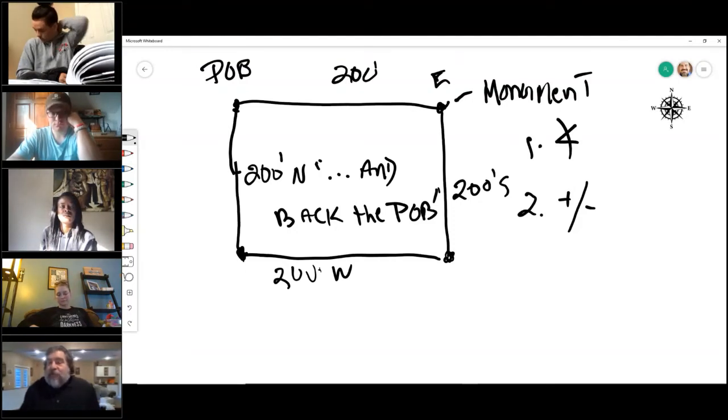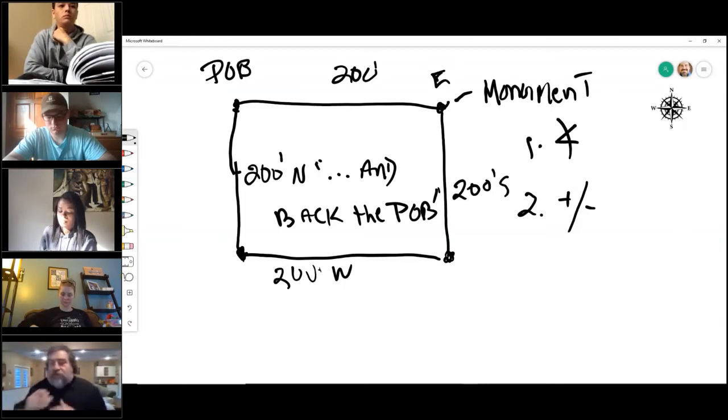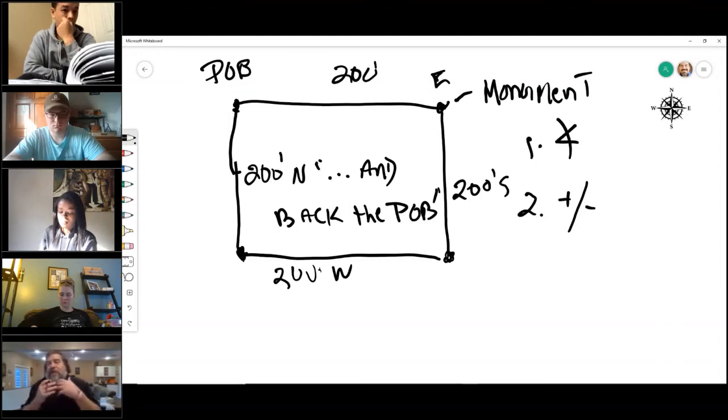Now, why is it more or less? It is more or less because, remember, they're using a naturally occurring body of water, a creek, as the boundary or the monument. And we learned in the other chapters that you can get accretion or erosion, and in theory that lake or that river could move a little bit because of the accretion or the erosion. So it's 216 and a half feet more or less to the center thread of the creek.